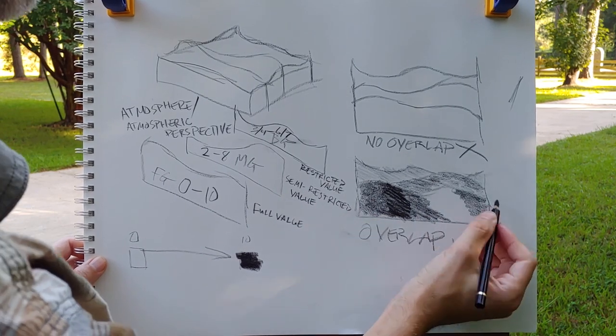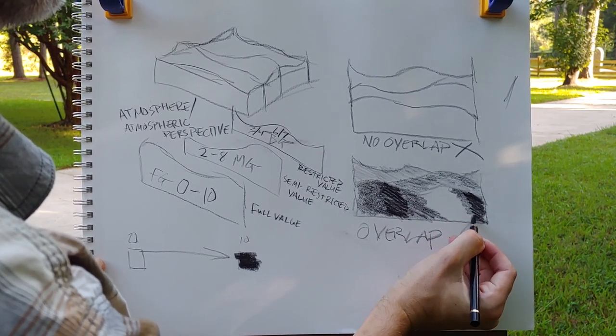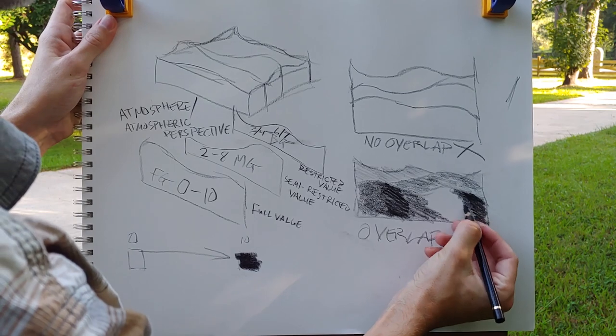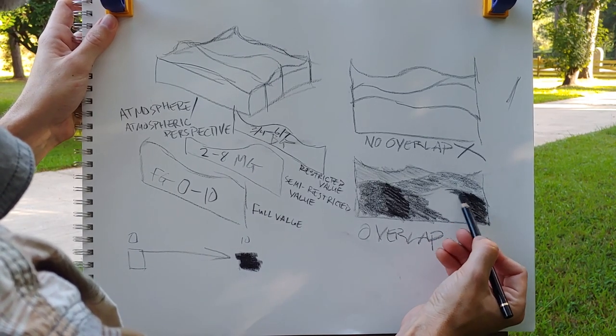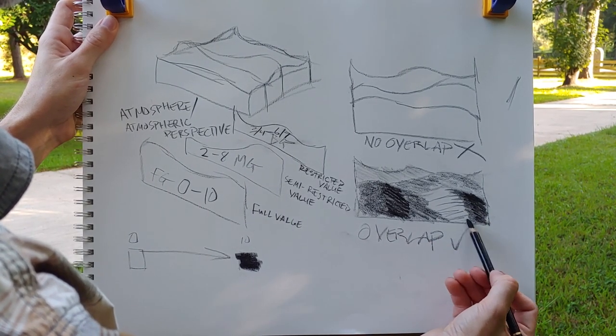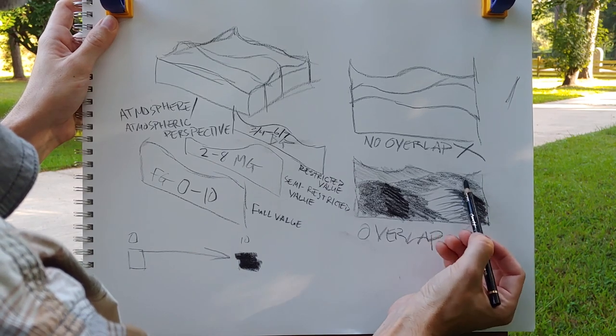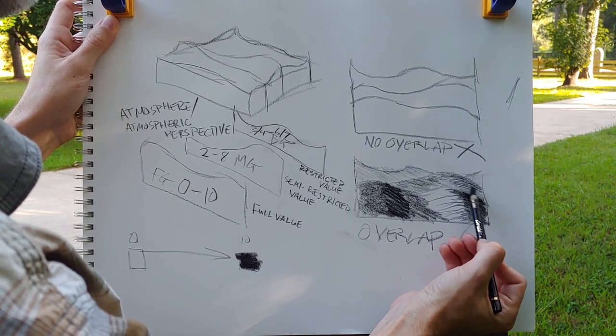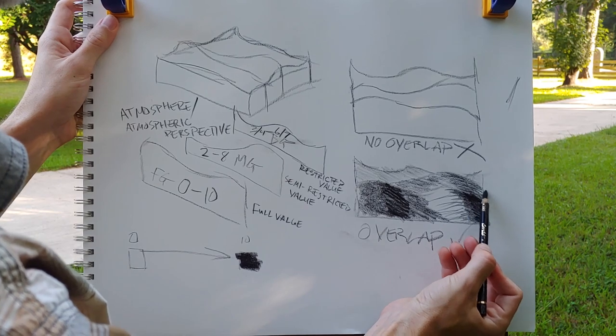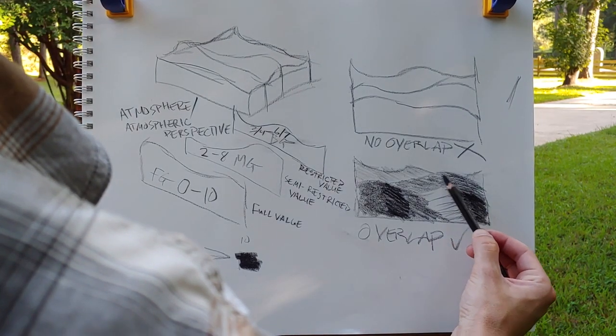And you can already see, just by having three tones overall, you create an increased amount of depth. But by adding a value range within each section, you create a lot more depth than you originally began with, just by adding those tones.